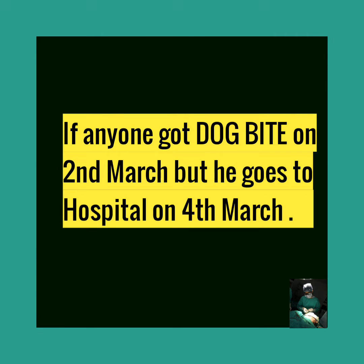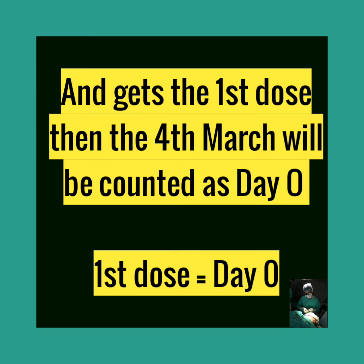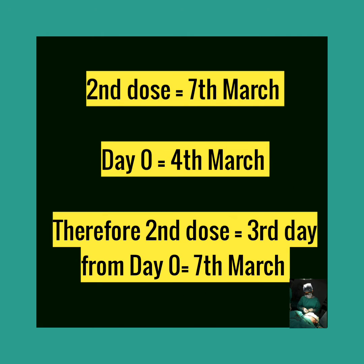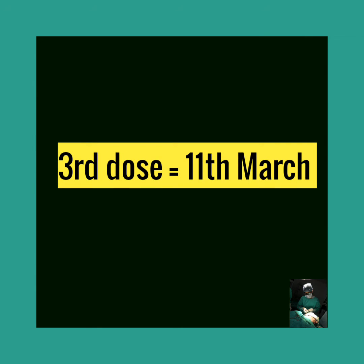If anyone got a dog bite on 2nd March but goes to the hospital on 4th March and gets the first dose, then 4th March will be counted as day 0. From then, we calculate the 2nd dose. Starting from 4th March: 5, 6, 7th — that is, 7th March will be the 2nd dose. Then the 3rd dose will fall on 11th March.